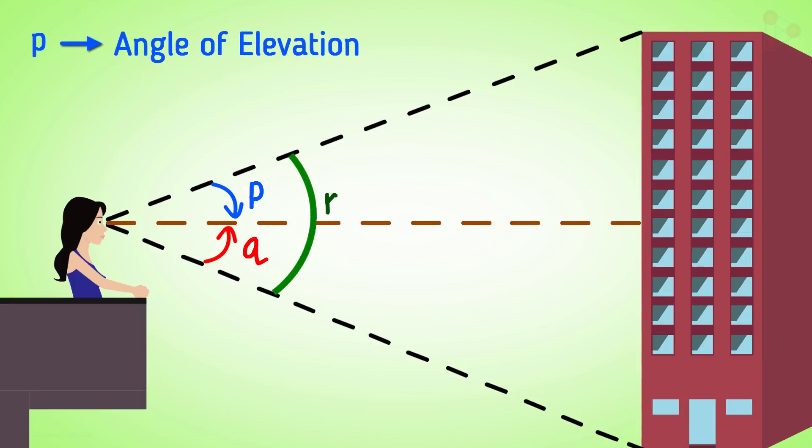The angle of elevation is P and is formed when she is looking up. And the angle of depression is Q which is formed when she is looking down.